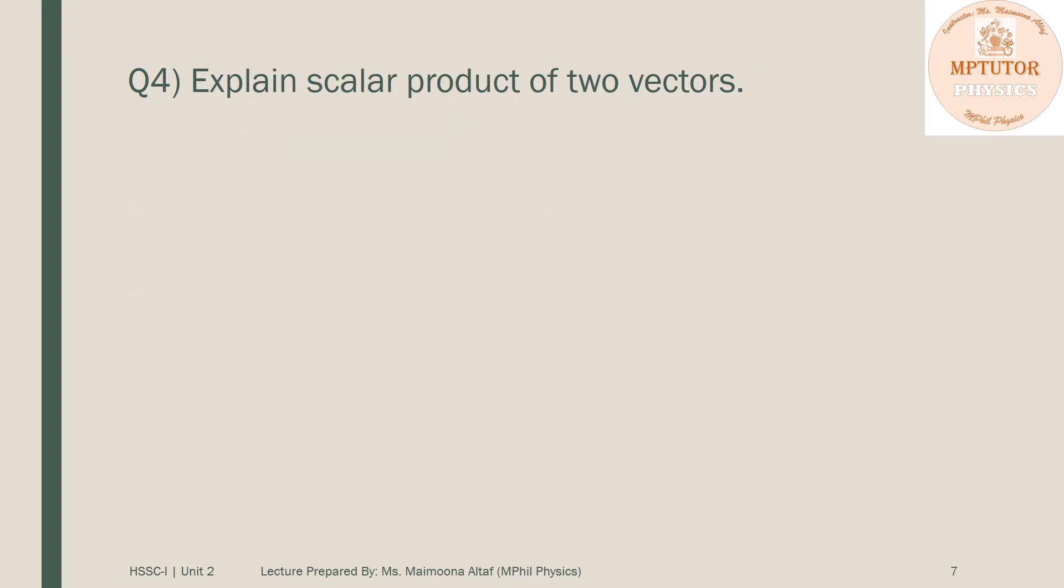Question number four is: explain scalar product of two vectors. The answer to this question is given on page number 37. You have to write down the complete topic 2.7.1 along with figure 2.19.